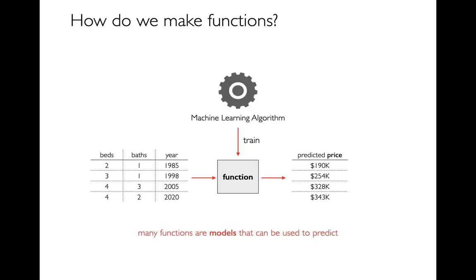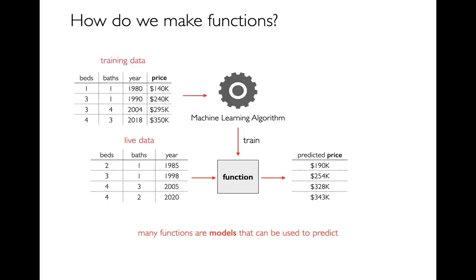The idea of machine learning is that instead of having a human write these functions, we're going to have a computer automatically generate them. The way they're going to do that is by learning from example. We'll feed in a bunch of training data — houses that have sold for different amounts with different bedrooms and baths — and try to infer things like how much is a bedroom worth, how much is a bath worth, how useful is it to have a newer house. Then based on that, we generate a function and use it to make predictions on other data.